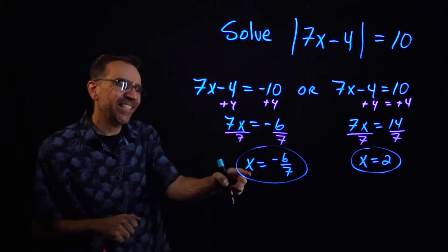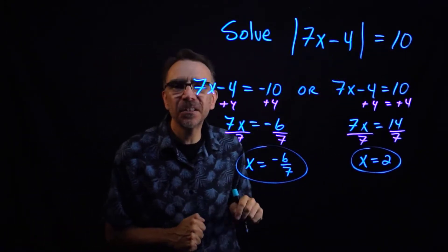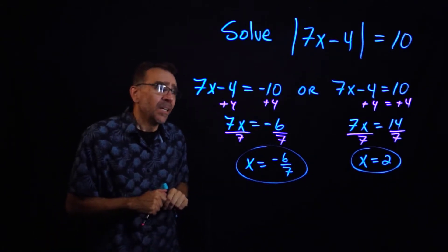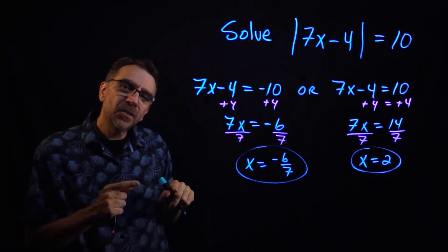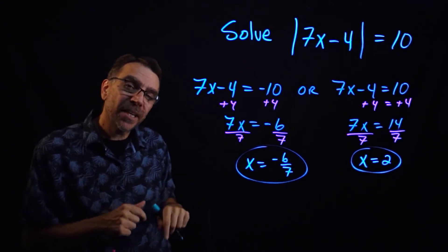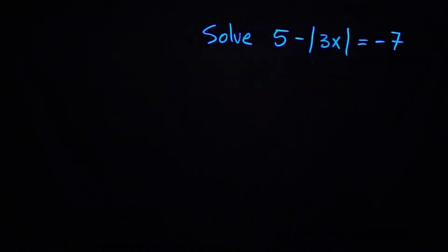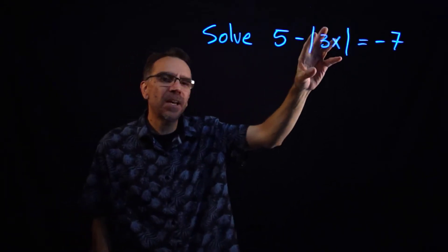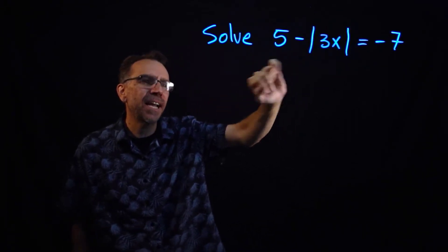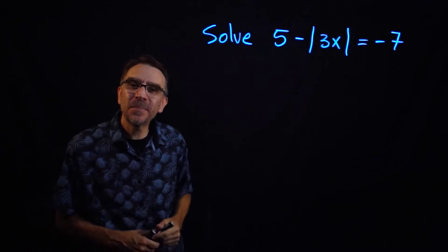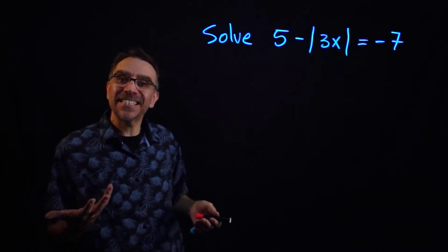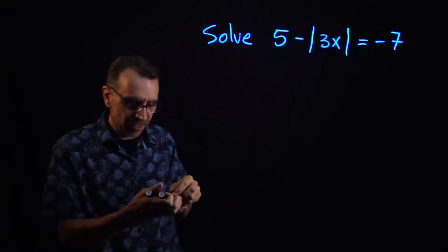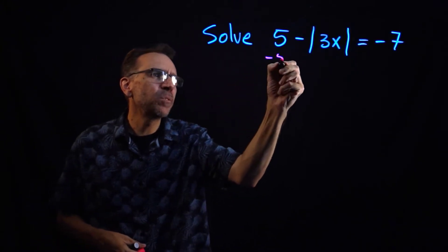You can plug those solutions back in to verify they solve the original equation. Now let's do a more complicated example. Here we have an absolute value equation but the absolute value is not isolated, so the first step is to isolate the absolute value using algebra.